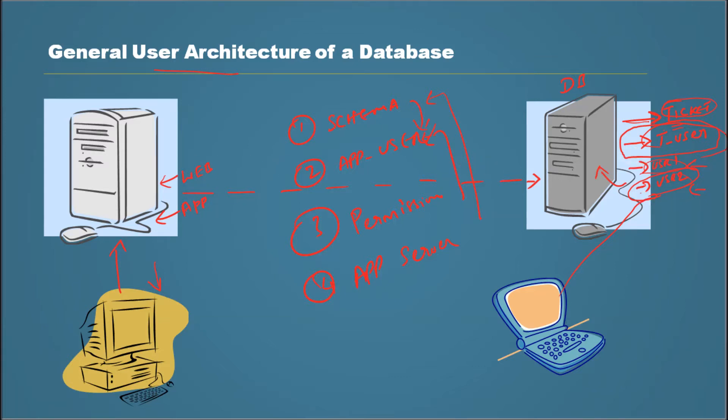So the application will always log in as the application user. The user connects to the application server. The application connects to the database as an application user. And then the application user has access rights to the schema and it brings back the data as requested by the application server.